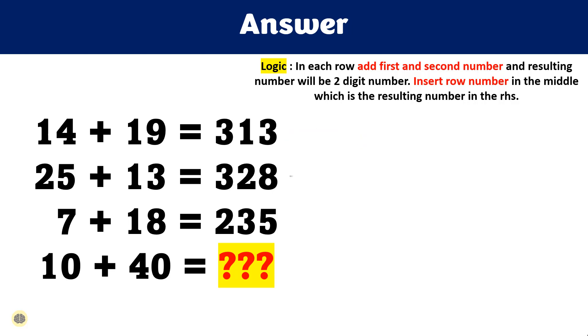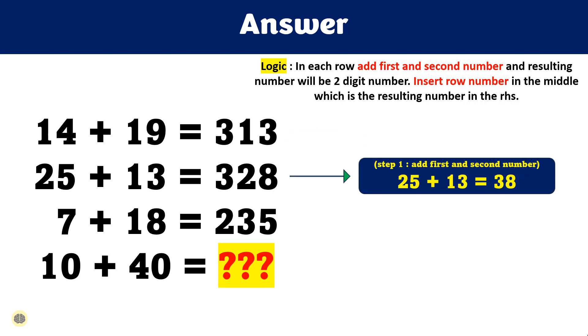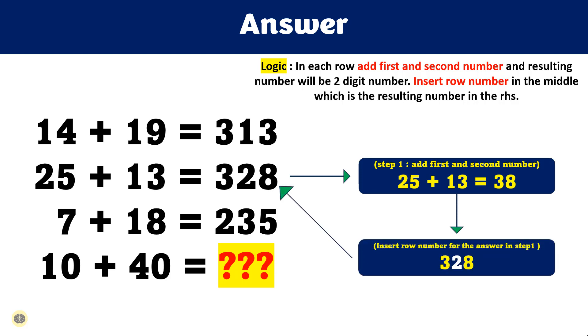Similarly, look at the second equation. So addition of two numbers, that is 25 and 13, will result in 38 and 2 is inserted in middle. Since this is second row, 2 is inserted between numbers.